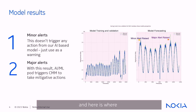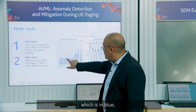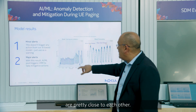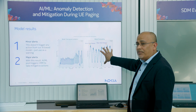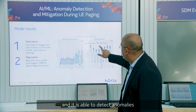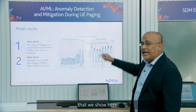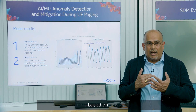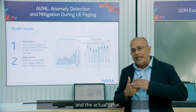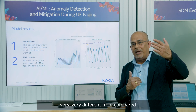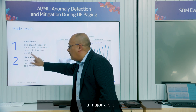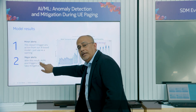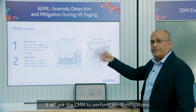We build a model, and here is where the model is getting trained. You can see the model's prediction, which is in blue, and the actual fanout are pretty close to each other. Then we let the model make decisions on data it hasn't seen, and it is able to detect anomalies. The anomalies are triggered based on the predicted fanout versus the actual value. If the actual value is very different from the predicted value, the model will raise a minor or major alert — and when a major alert is raised, it will ask the CMM to perform some mitigations.